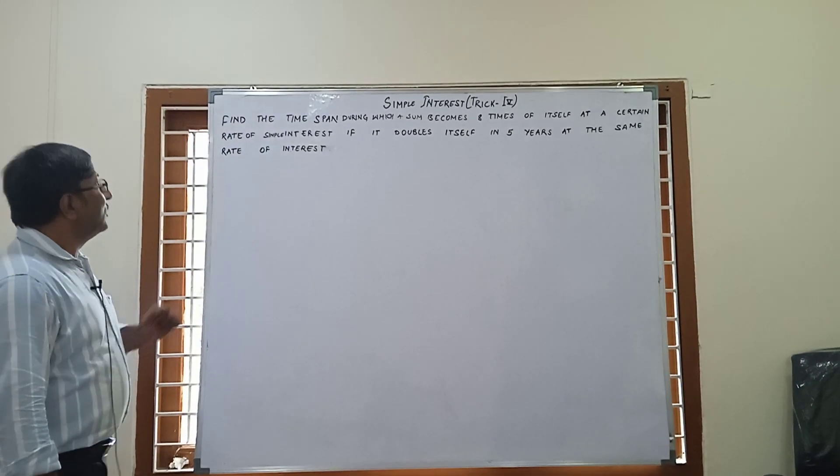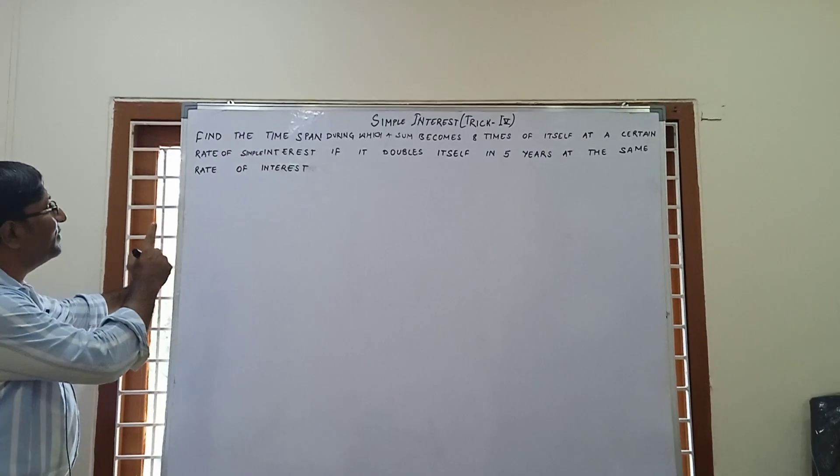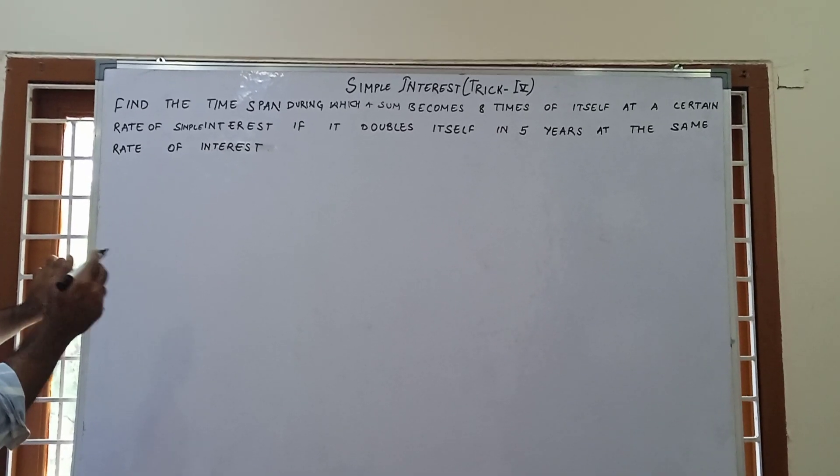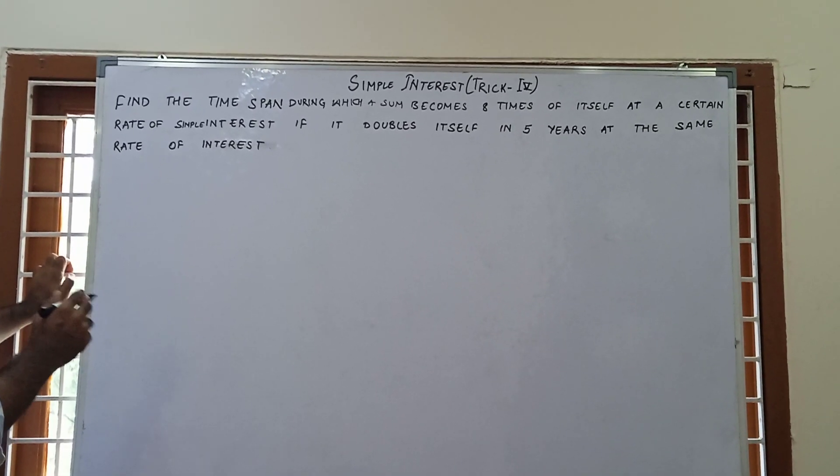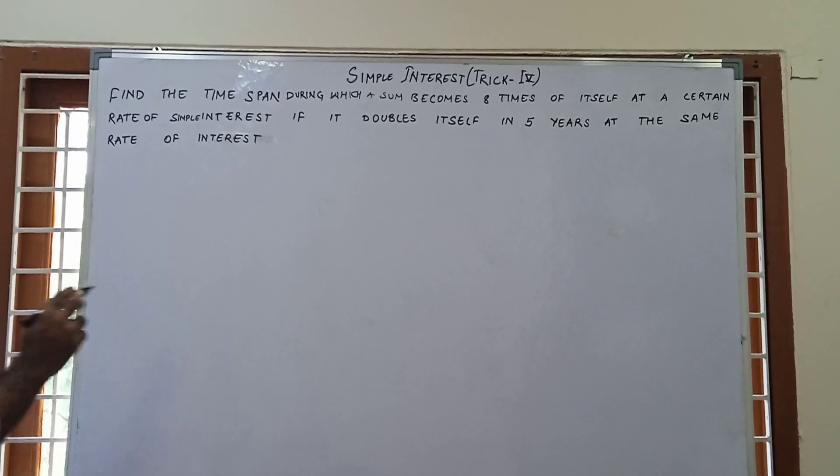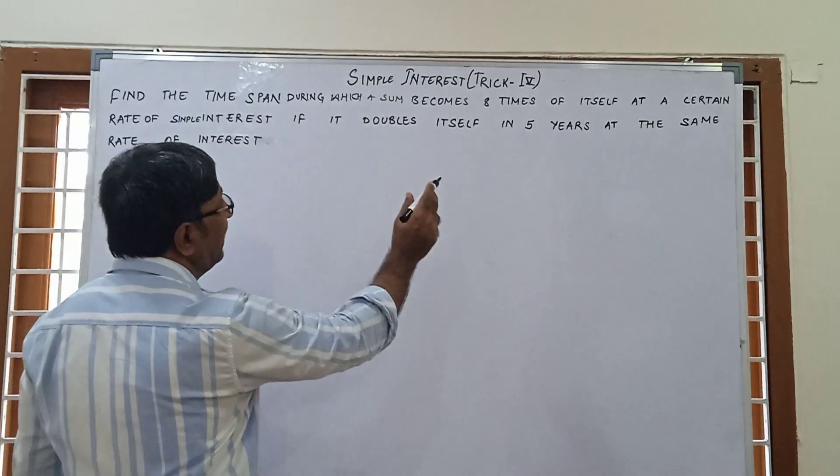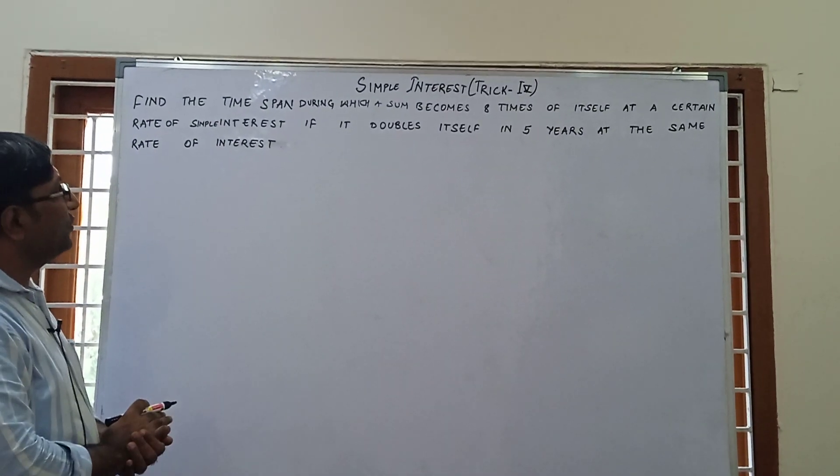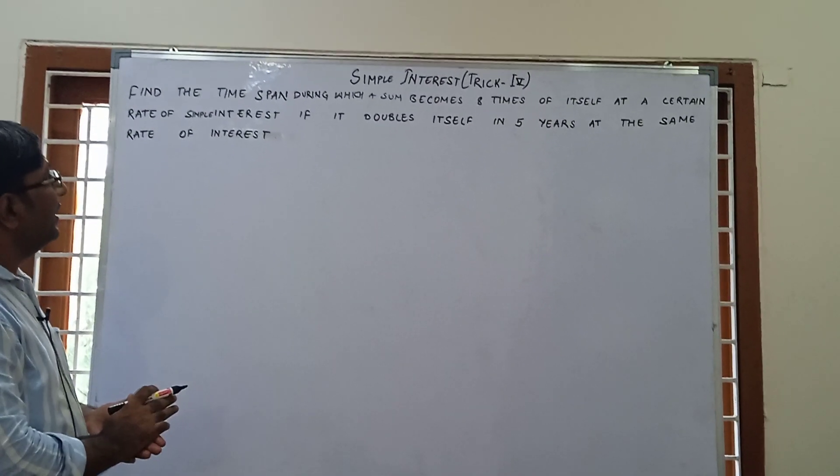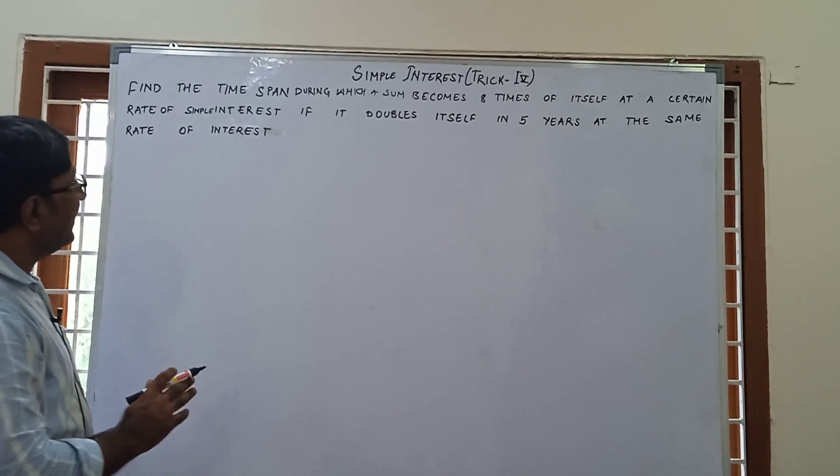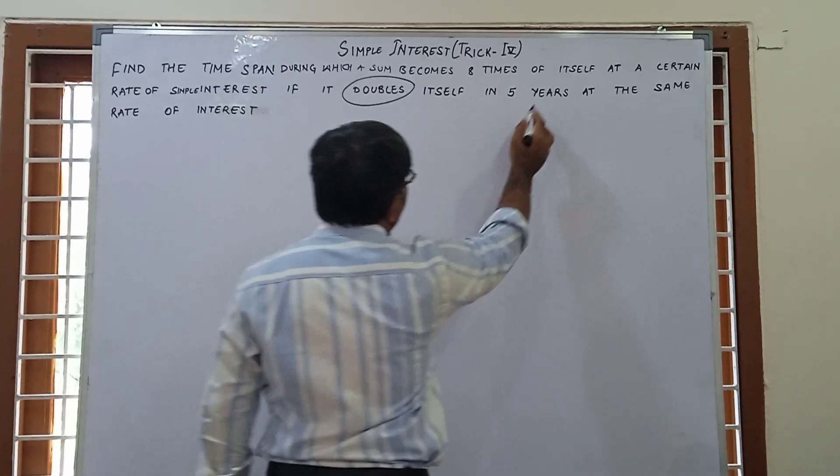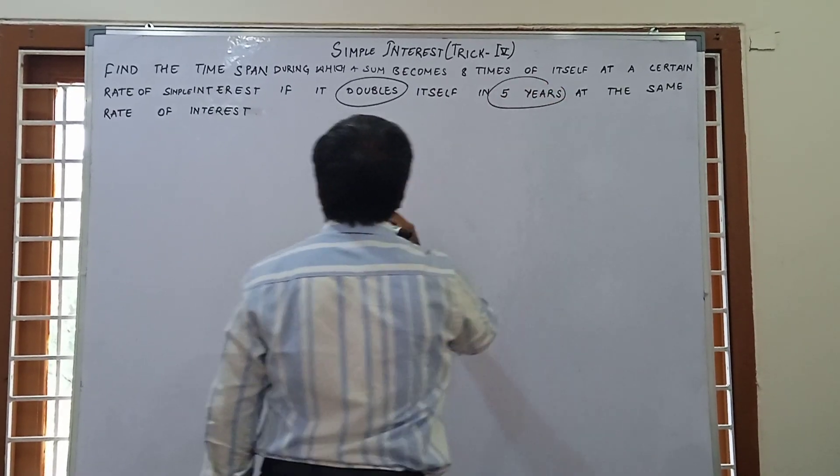What is the question? Find the time spent during which a sum becomes 8 times of itself at a certain rate of simple interest, if it doubles itself in 5 years at the same rate of interest.